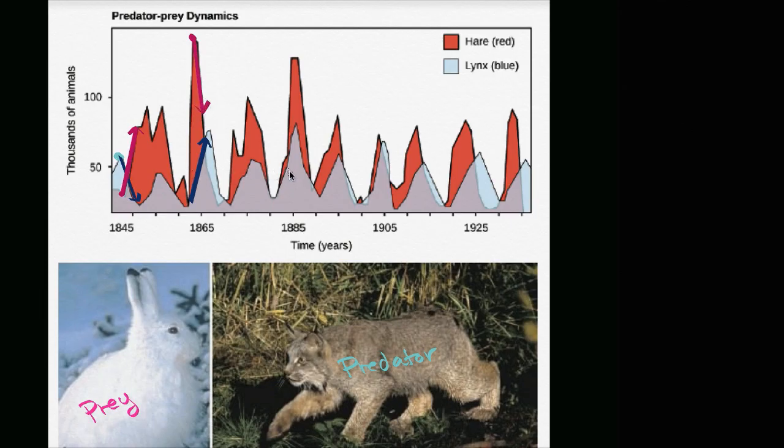So this is real data showing the snowshoe hare, the prey, and the Canadian lynx, the predator, over many, many decades to show this predator-prey cycle.